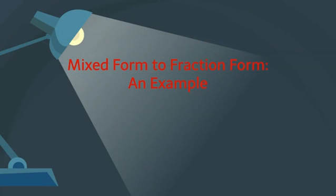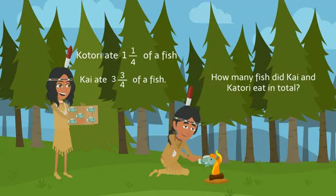Mixed Form to Fraction Form: An Example. Katori ate 1 and 1 fourth of a fish, where Kai ate 3 and 3 fourths of a fish.